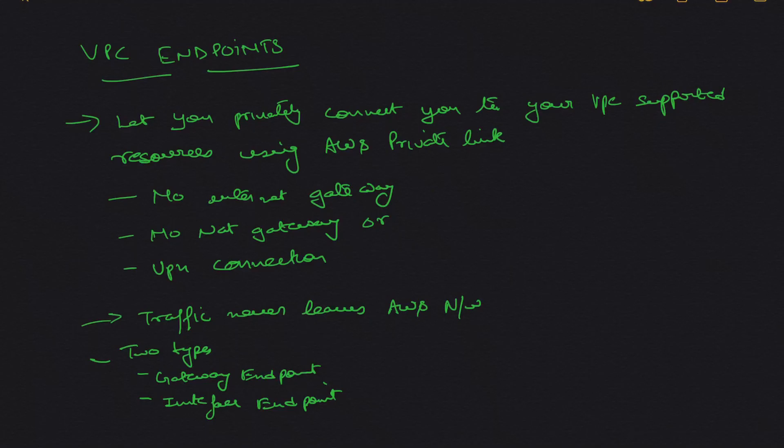Welcome back to the channel. In this video we are going to talk about VPC endpoints. Endpoints are basically a facility, a service provided by AWS, which lets you connect to supported services privately using the AWS private network. The technology it uses to do so is called AWS PrivateLink.